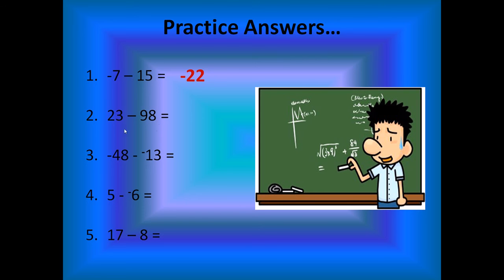Okay. 23 take away 98. We keep 23. Subtraction becomes addition. So it's 23 plus negative 98. Ah, signs aren't the same. We have to subtract. But that negative 98 has the greater absolute value. So we get negative 75.